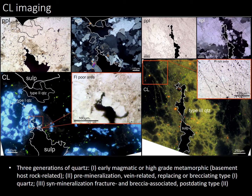CL imaging revealed three generations of quartz. Type 1: early, magmatic, high-grade metamorphic, basement host-rock-related, fluorescing bright blue. Type 2: non-fluorescing, pre-mineralization, vein-related, replacing or reshaping Type 1. Both Type 1 and Type 2 quartz are associated with fluid-inclusion-poor areas and are indistinguishable in plane-polarized and cross-polarized light. Type 3 quartz, fluorescing yellowish-green, is syn-mineralization, fracture- and breccia-associated, post-dating Types 1 and 2, and is associated with fluid-inclusion-rich areas and mineralization.